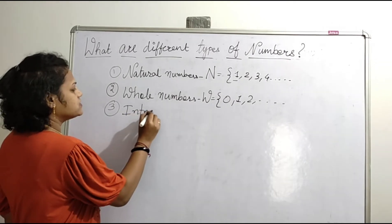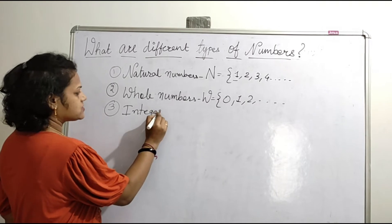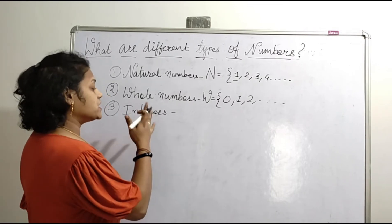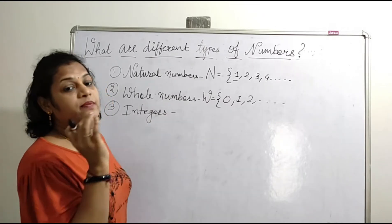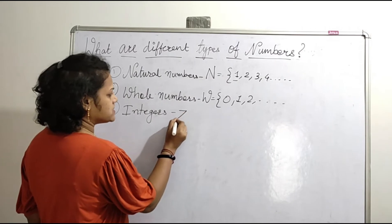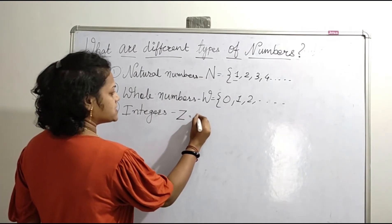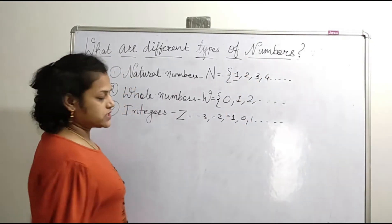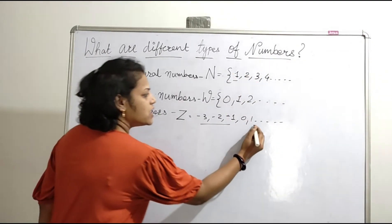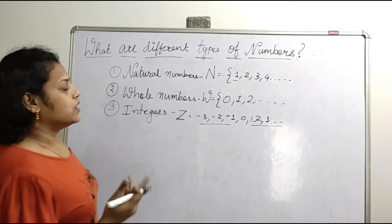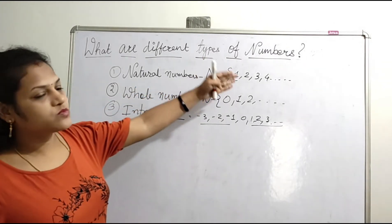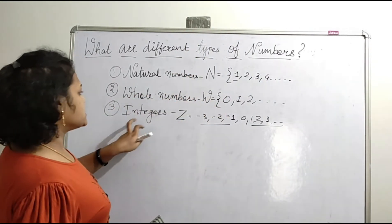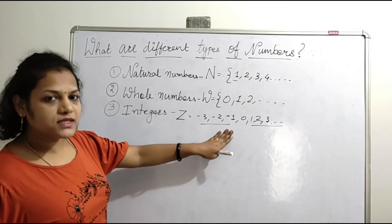Next, I want to explain about integers. Integers contain all positive whole numbers and also include negative natural numbers. Integers are denoted by capital Z and contain both negative and positive numbers. So to recap: natural numbers always start with 1; whole numbers always start with 0; and integers, denoted by capital Z, contain both negative and positive numbers.